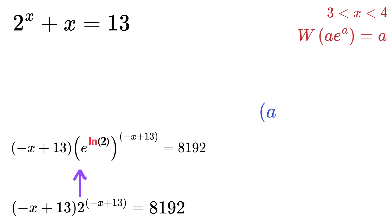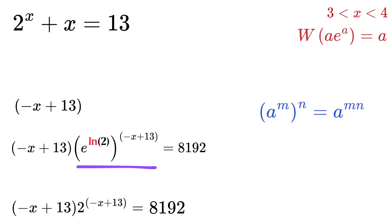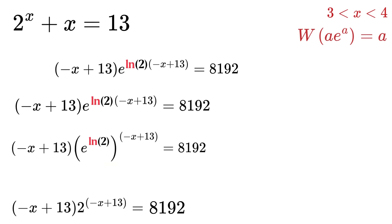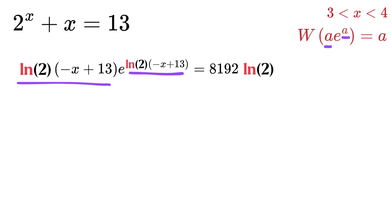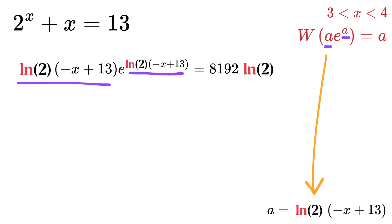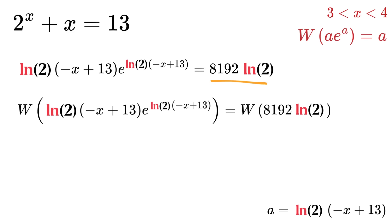Next, we use a power rule which says that a raised to m, whole raised to n, equals a raised to power m times n. So this becomes minus x plus 13, multiplied by e raised to the power log 2 times minus x plus 13, equals 8192. Finally, multiply both sides by log 2. Now both sides are in the form a times e raised to the power a, where a equals minus x plus 13 times log 2. So we can apply the W function on both sides.